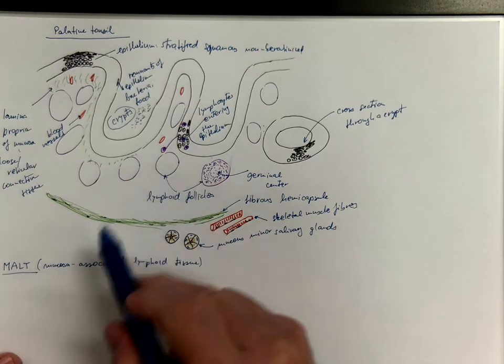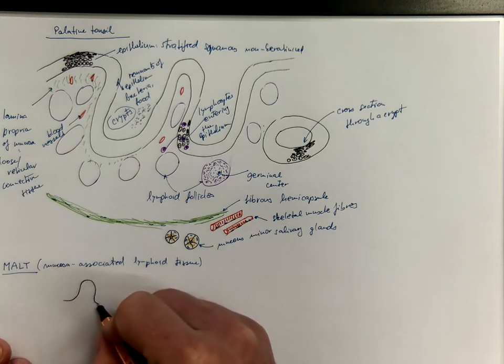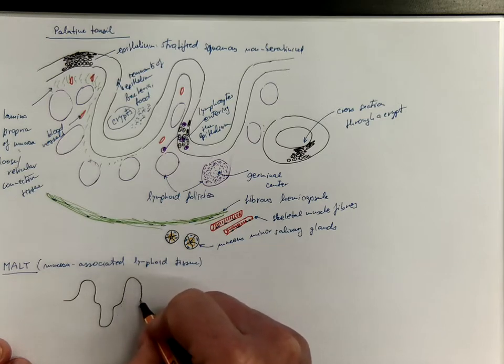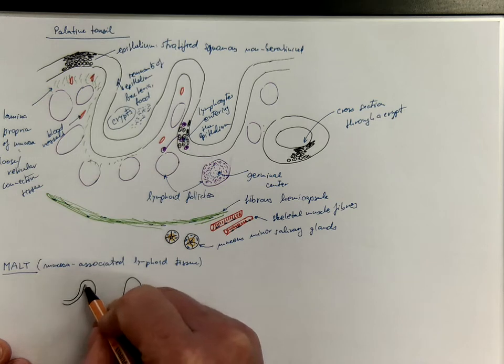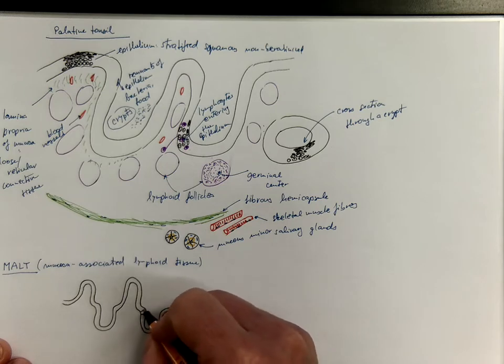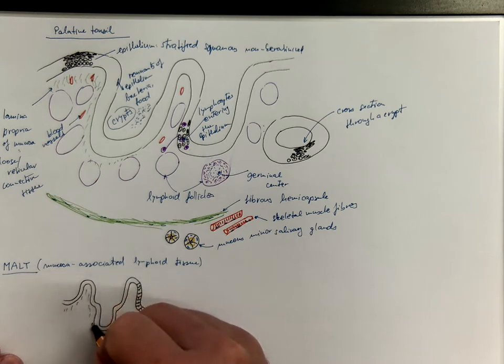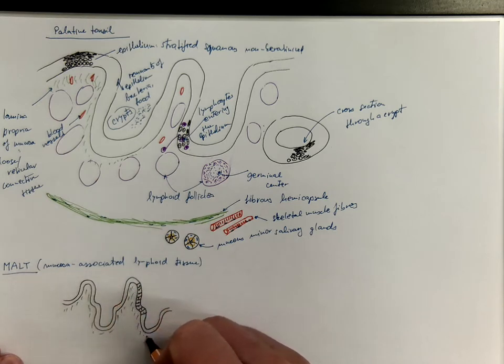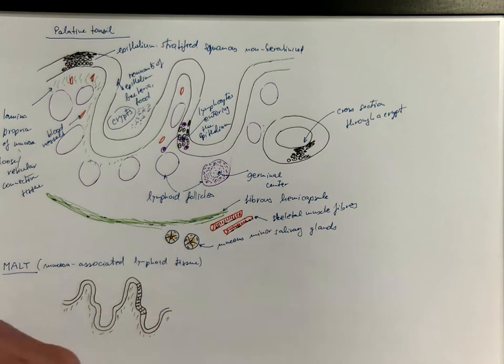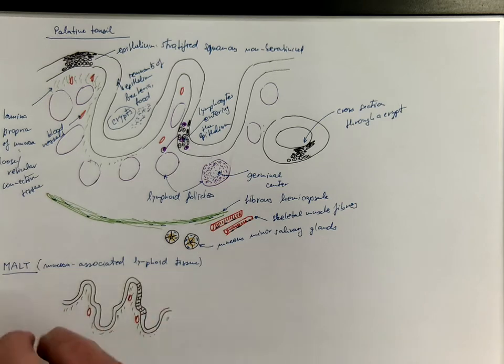Let's have another example of MALT from the intestinal, let us say from the distal ileum, where you have the villi, intestinal villi and crypts, with a simple columnar epithelium. We got the lamina propria of the mucosa, that's the loose connective tissue with blood and lymph vessels, and we got the lamina muscularis of the mucosa.